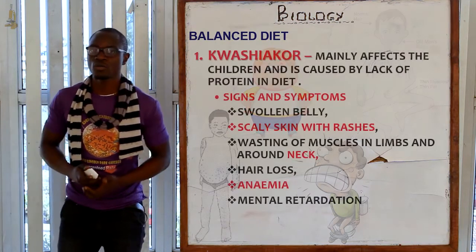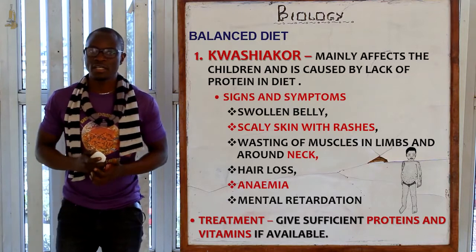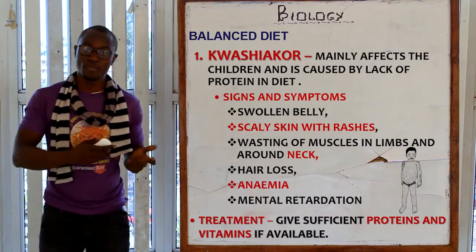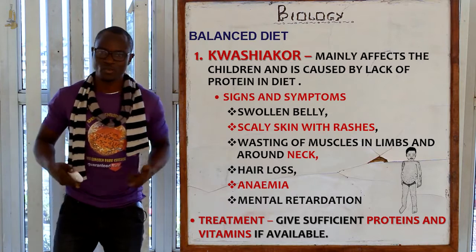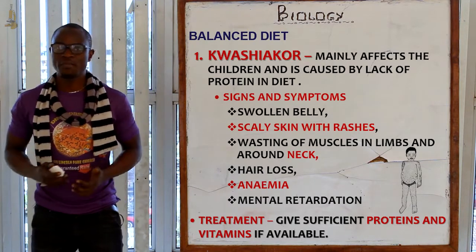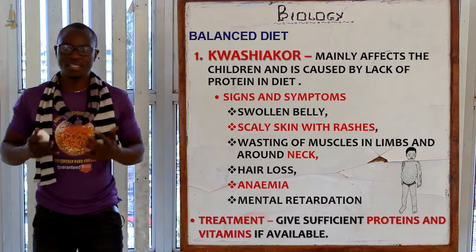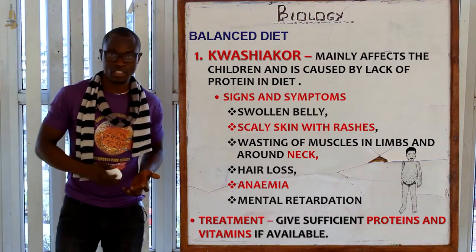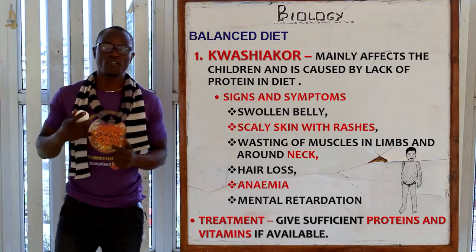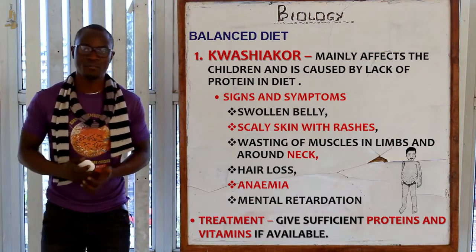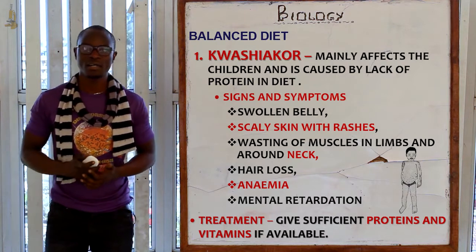Let's begin with kwashiorkor. Kwashiorkor mainly affects children and is caused by lack of protein in the diet. The signs and symptoms include a swollen belly, scaly skin, and rashes. The treatment is to give food rich in proteins and vitamins so as to be able to counter this disorder.